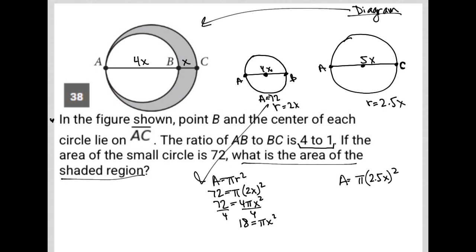And then go to my calculator. 2.5 squared is 6.25. This becomes 6.25 pi X squared.